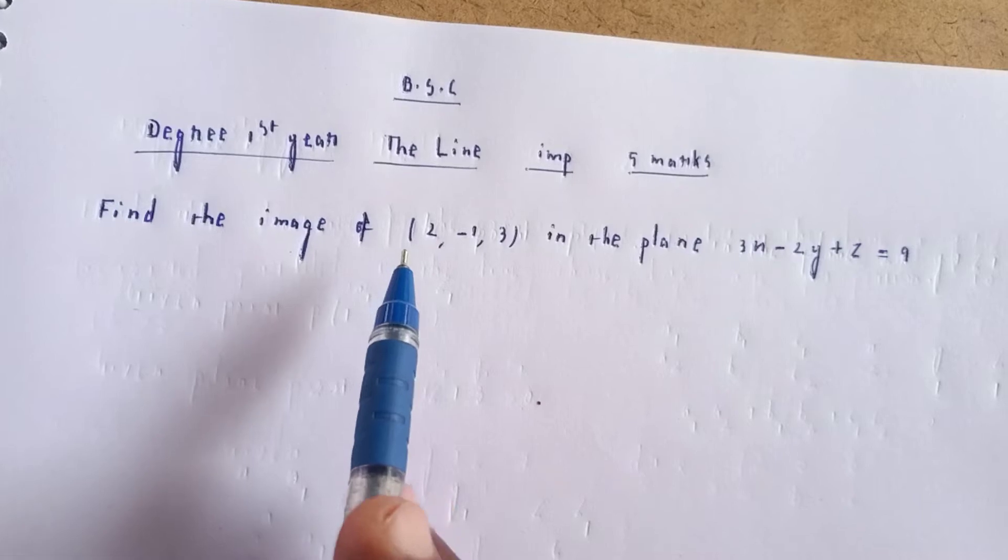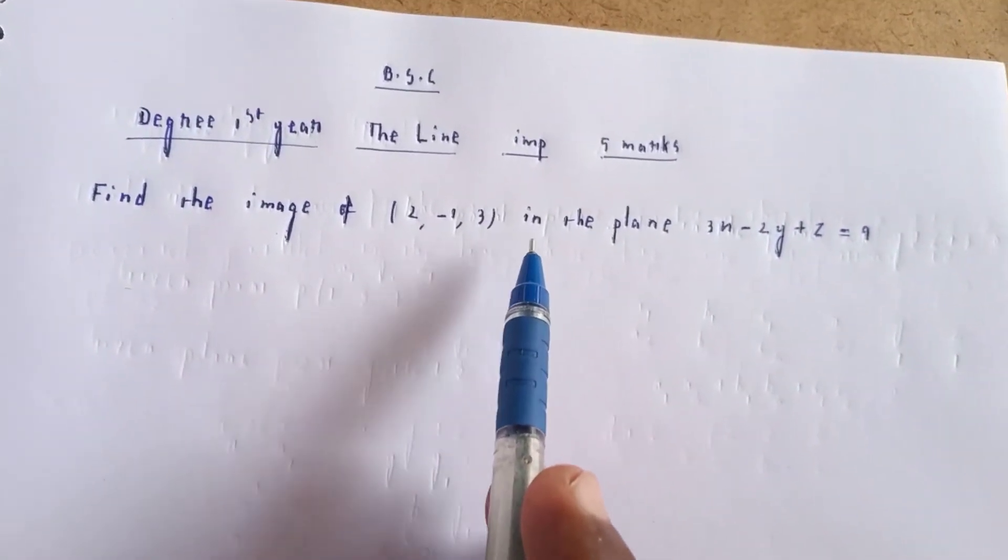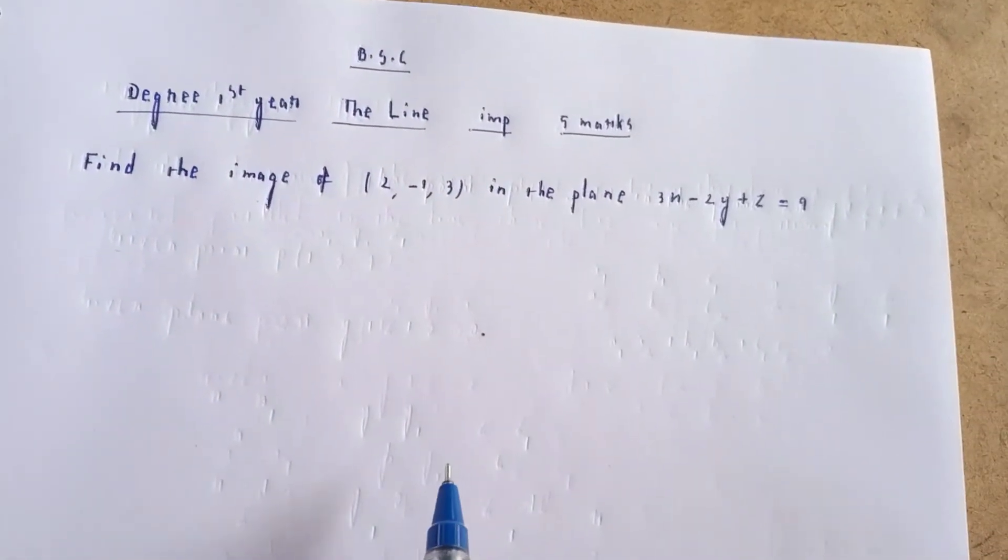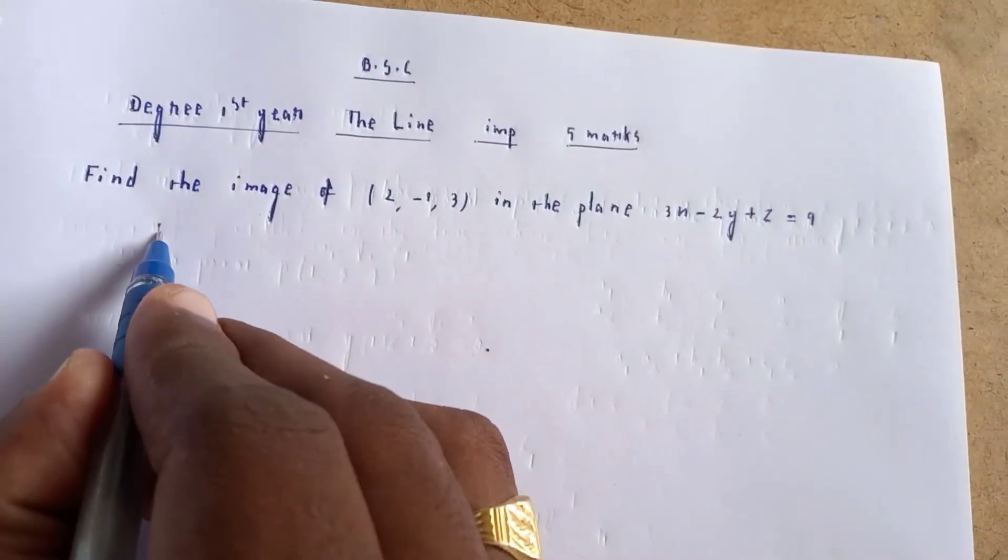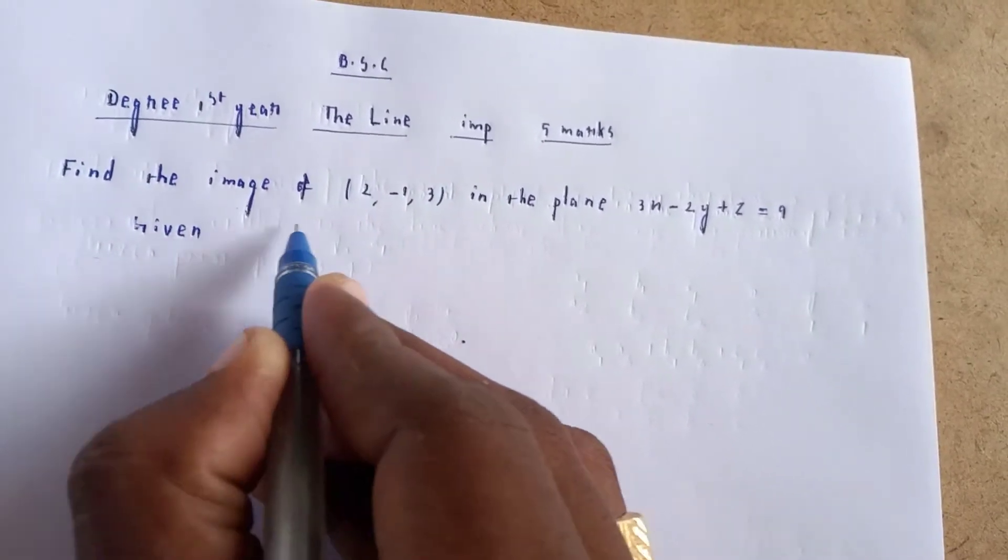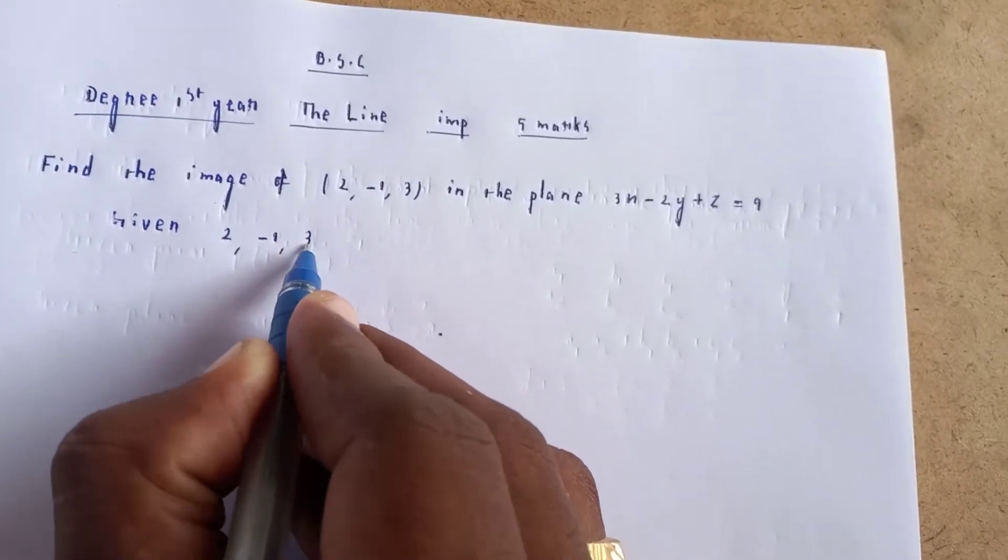Welcome to my channel BSC The Line. In this problem, we need to find the image of the point (2, -1, 3) in the plane 3x - 2y + z = 9. First, let me write down the given point and the given plane equation.